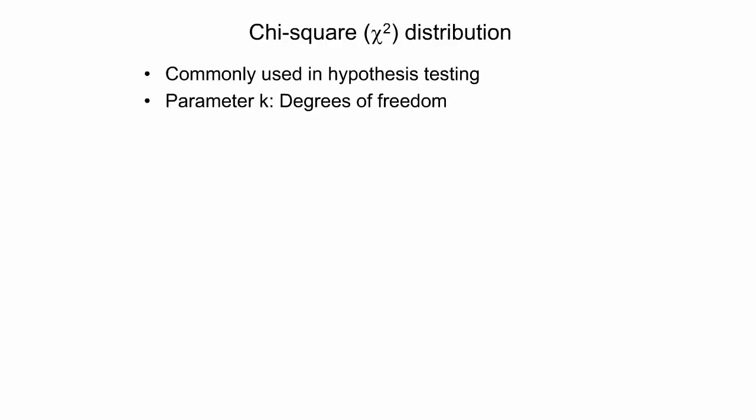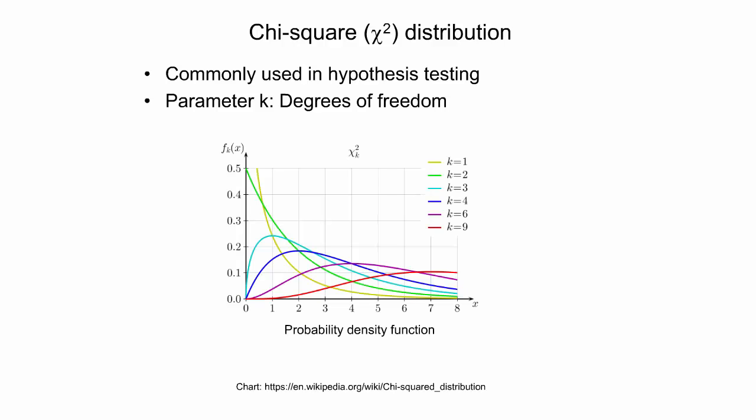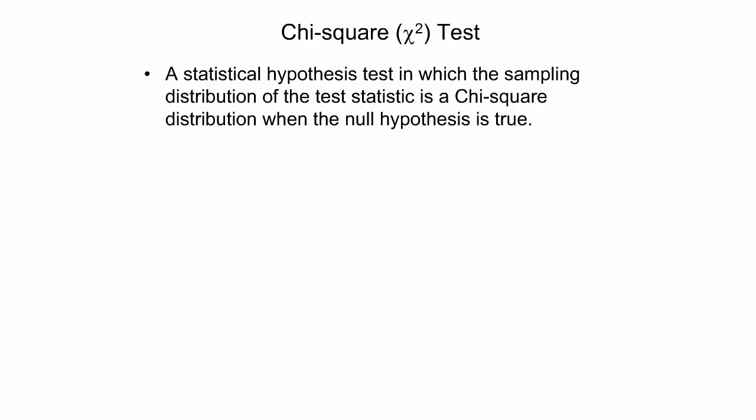Another example of a continuous probability distribution is the chi-square distribution, often used in hypothesis testing. The chi-square distribution requires one parameter, k, called the degrees of freedom, to be fully specified. The chart shows the probability density function of the chi-square distribution for different degrees of freedom. A chi-square test is a statistical hypothesis test in which the sampling distribution of the test statistic is a chi-square distribution when the null hypothesis is true, and it is commonly used for quadrat analysis.